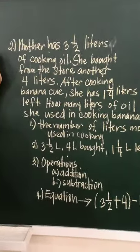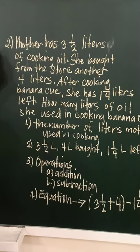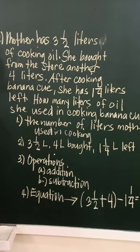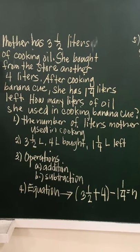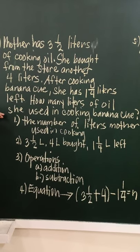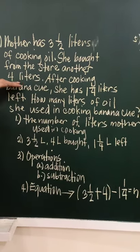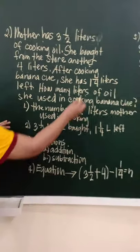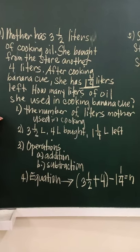Now, problem number two. Mother has three and one-half liters of cooking oil. She bought from the store another four liters. After cooking banana cue, she has one and one-fourth liters left. How many liters of oil she used in cooking banana cue? In face-to-face class, I let my pupils translate the problem. So, mama has three and one-half of cooking oil. She bought four liters from the store. Then, she cooked banana cue. After cooking, what's left is one and one-fourth. So, the question is, how many liters of oil did she use in cooking.